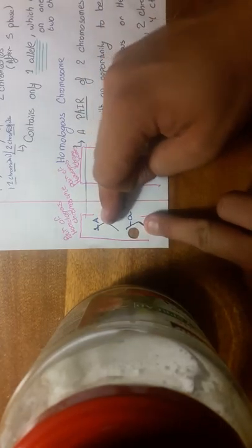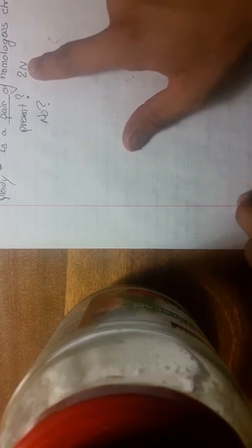Then you have a 2N ploidy. However, if there's only one chromosome, so that's only in gametes. So this will be in gametes. And this is going to be in every other cell. Every other cell is 2N.